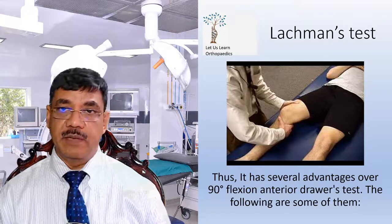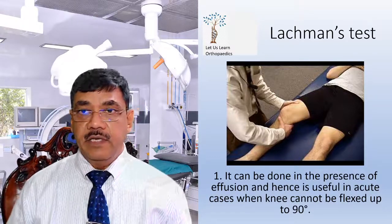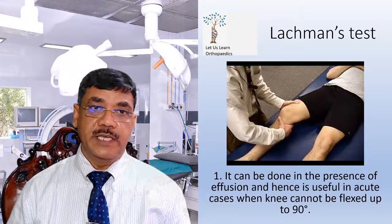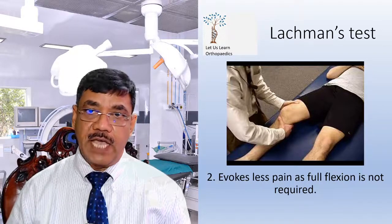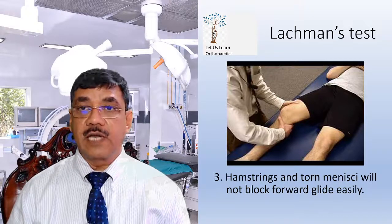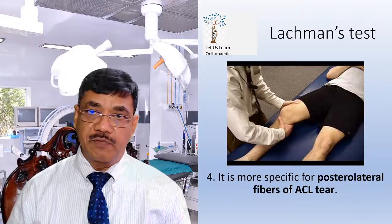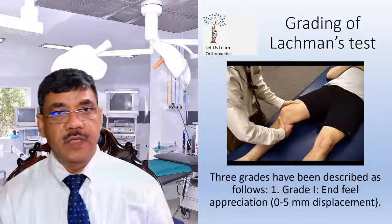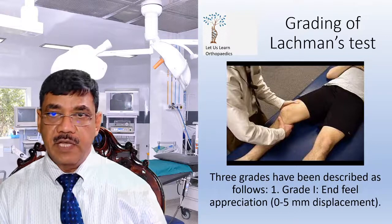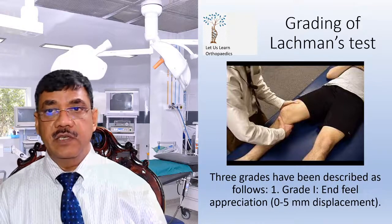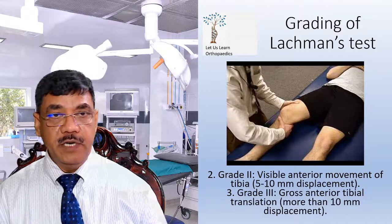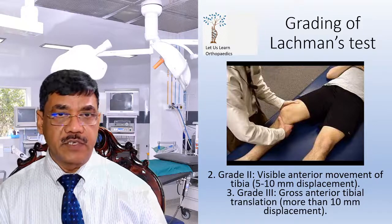The advantages of the Lachman test include: one, it can be done in the presence of effusion and is useful in acute cases when the knee cannot be flexed to 90 degrees; two, it evokes less pain as full flexion is not required; three, hamstrings and torn menisci will not block the forward glide easily; four, it is more specific for the posterolateral fibers of the ACL. Three grades have been described: grade one — end-feel appreciation with 0 to 5 mm displacement; grade two — visible anterior movement of tibia with 5 to 10 mm displacement; grade three — gross anterior tibial translation with more than 10 mm displacement.